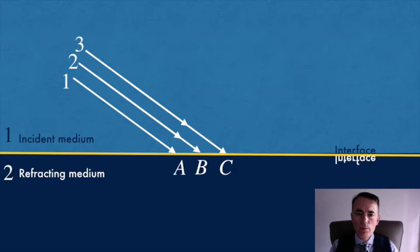We focus on the points of the interface A, B and C. We draw semicircles into the second medium and we need to find the tangent to the wavefront at the same moment of time, of course.